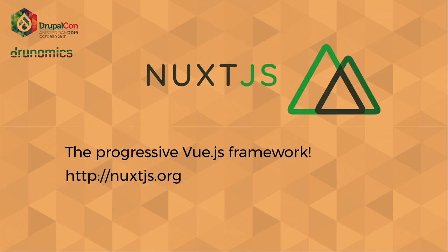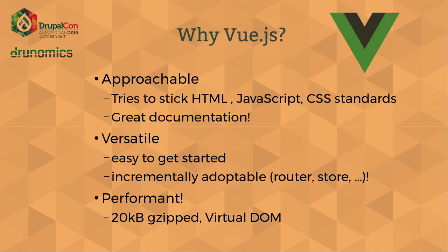In this presentation I'm talking about Nuxt.js. So what's Nuxt.js? It's a progressive Vue.js framework. And what's Vue.js? Vue.js is a very approachable modern front-end library — one of the main alternatives to React. We decided to use Vue because it's really approachable, and it tries to stick to the HTML standards, which makes it very easy to get into.